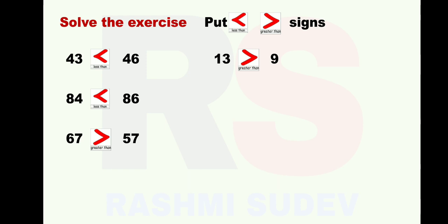Next sum: 23 and 32 are the given numbers. 23 is to the left hand side, 32 is to the right hand side. 23 is the smaller number and 32 is the bigger or greater number. Therefore we are going to put a less than sign. How are you going to read this? 23 is less than 32.